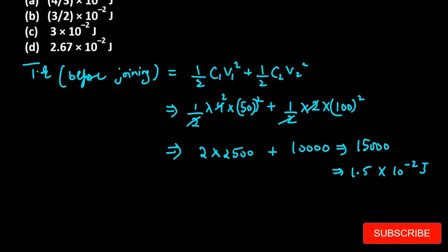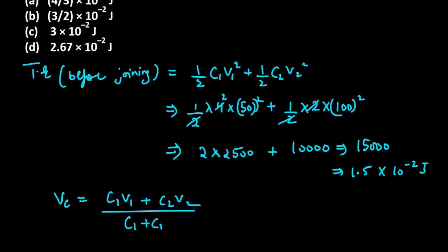Next we have to see what value is V_c, so that we can find the total energy after joining them. First of all, we will find V_c, which will be C1 V1 plus C2 V2, divided by C1 plus C2.